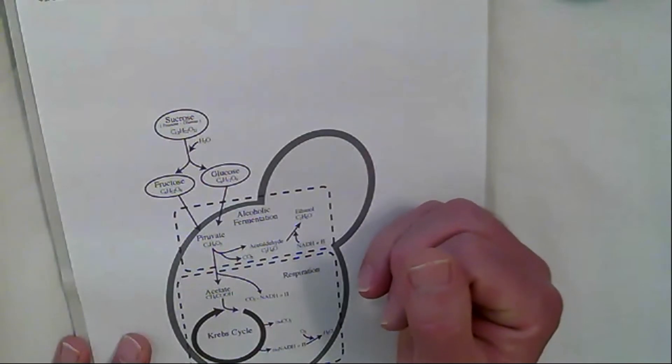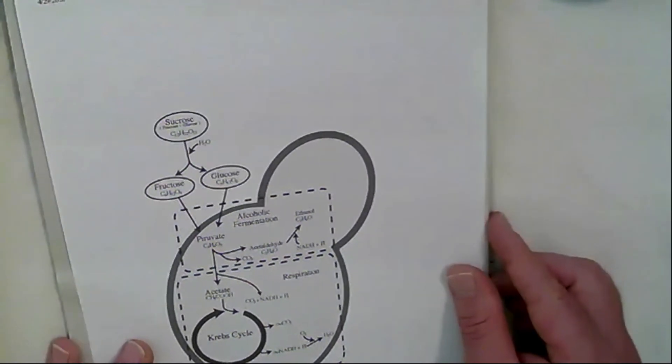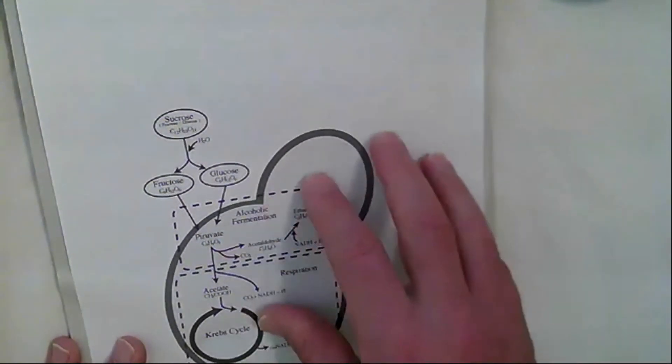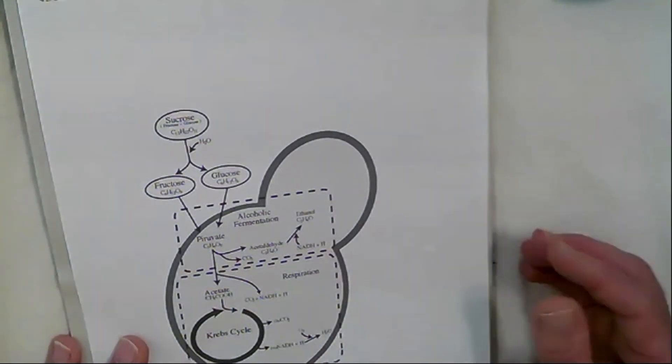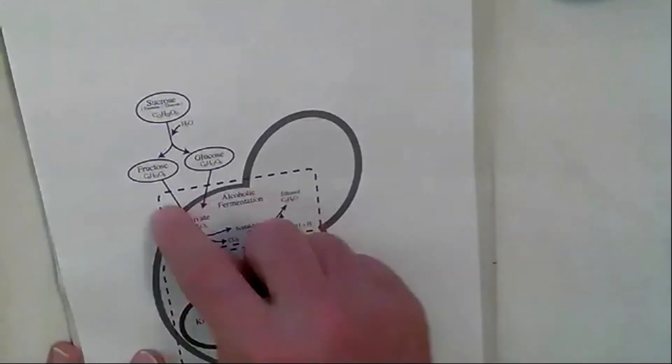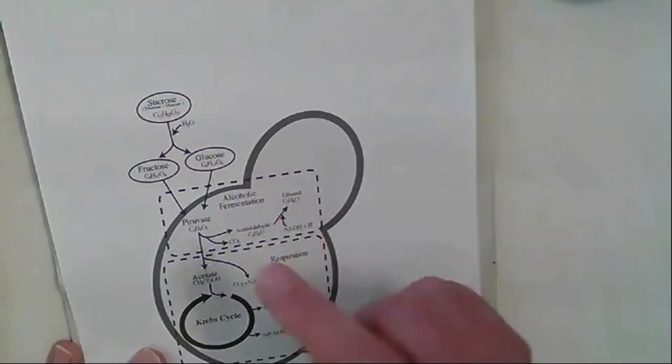I want you to show me that you understand that sucrose becomes ethanol through the medium of yeast because of these 14 processes. You're not gonna be able to memorize this. I want you to talk in a coherent way and show me that you know this well enough to describe it to a six-year-old.